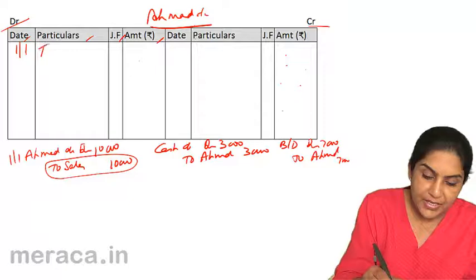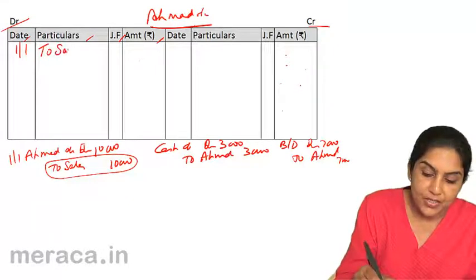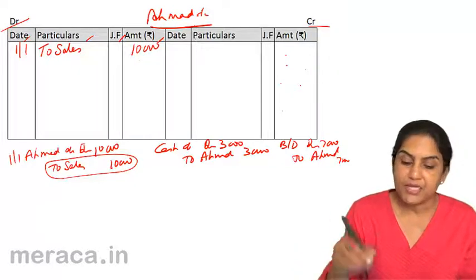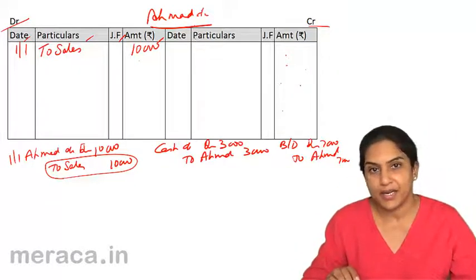So we write here 2 sales. What is the amount? 10,000. This way, Ahmad's account stands debited.